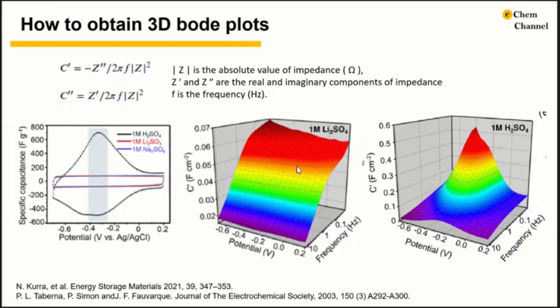In a 3D Bode plot, the y-axis is the real component of capacitance. It is derived from impedance measurement by this equation. The C prime reflects the contributions from fast electrochemical processes, double-layer or redox-based, that are reversible at a given frequency for the applied AC waveform, and thus can be used to discriminate different processes on the basis of their time scale.